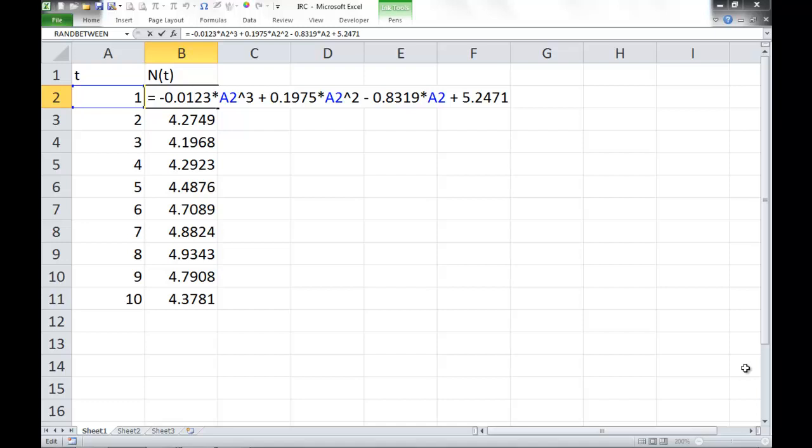And column B is the function values for each corresponding value of t. And all I've done is typed in our formula, the function that we are given, and instead of using t, I've used cell references to A2. And then if you copy the formula down, it'll generate all these values for you.